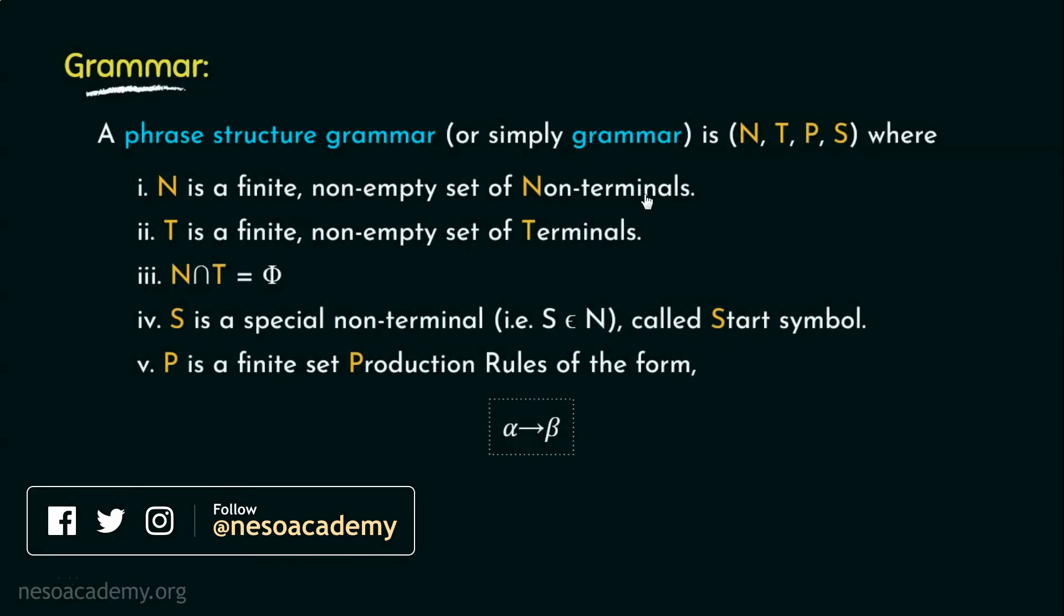Before diving straight to the classifications, let's revisit the formal definition of the grammar. According to Noam Chomsky, a phrase structure grammar is defined by four tuples: N, T, P and S.